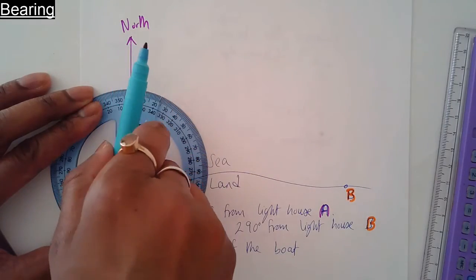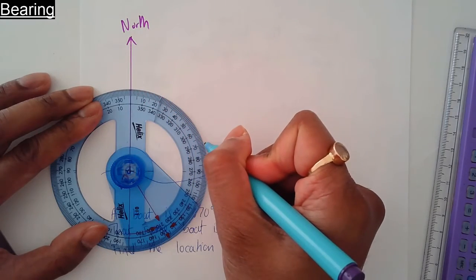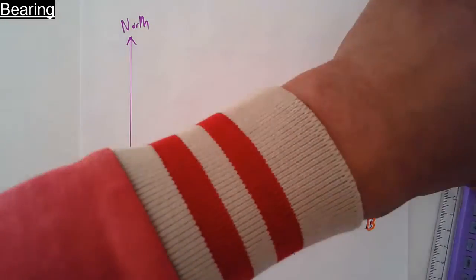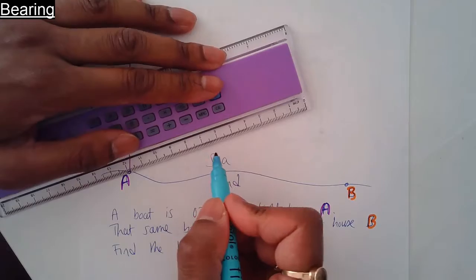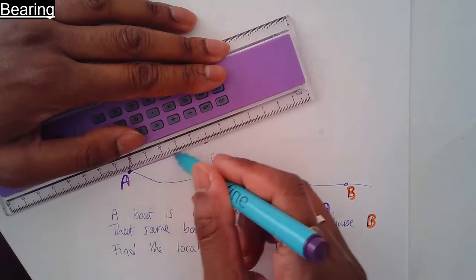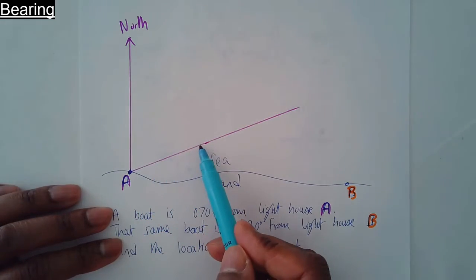From that dot, just take it across and join it up. So that boat could be anywhere along this line. To find exactly where it is on this line, we need to look at the second sentence.